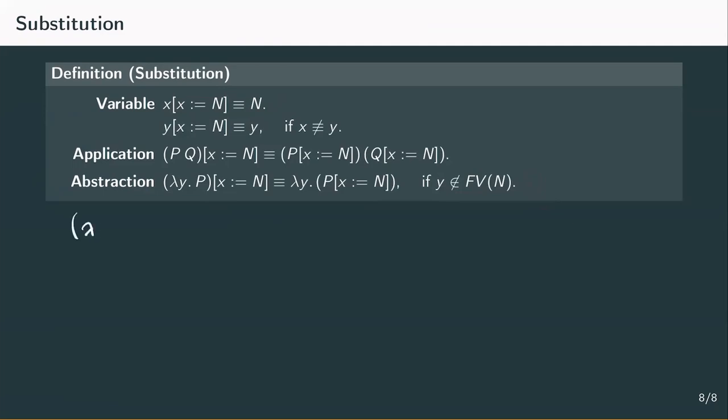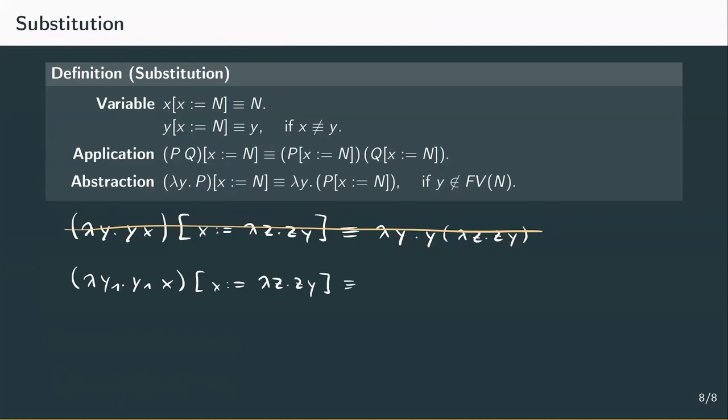I'll show you an example of this. Lambda y dot y x, where we substitute x by lambda z dot z y. If we blindly follow the substitution definition, we would get lambda y dot y applied to lambda z dot z y. And the free variable y from the last term is suddenly bound. But we have the alpha conversion. So we know that after renaming, y would not occur freely and bound in the same term at the same time. The term would be something like this. Lambda y1 dot y1 x with x substituted by lambda z dot z y. Which yields lambda y1 dot y1 applied to z dot z y. In this term, we can see that the y1 and y are different variables and so we won't confuse them.